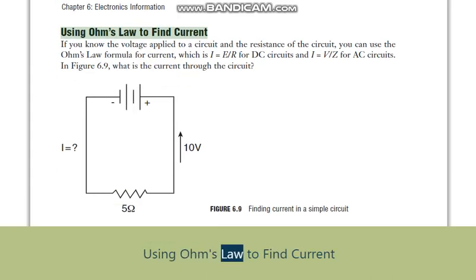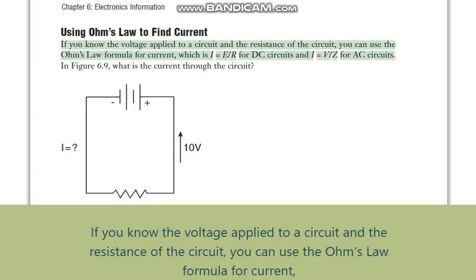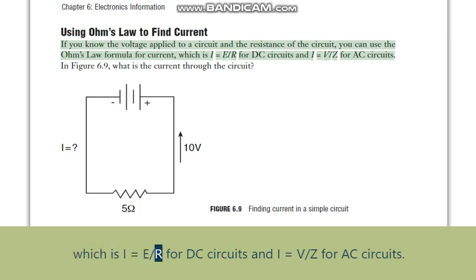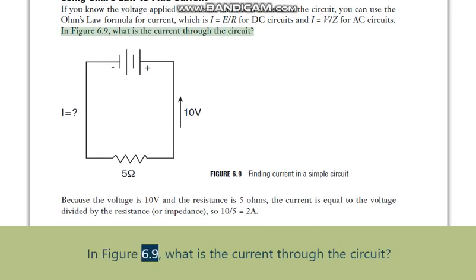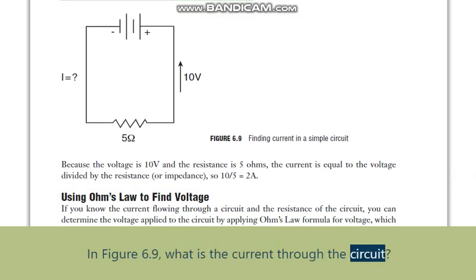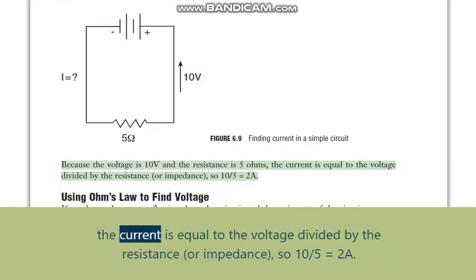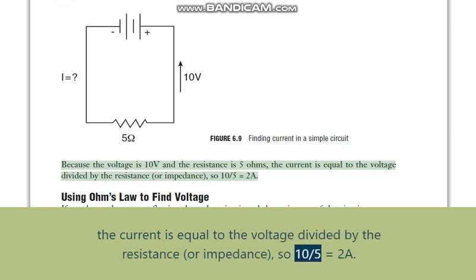Using Ohm's law to find current. If you know the voltage applied to a circuit and the resistance of the circuit, you can use the Ohm's law formula for current, which is I equals E slash R for DC circuits, and I equals V slash Z for AC circuits. In figure 6.9, because the voltage is 10V and the resistance is 5 Ohms, the current equals voltage divided by resistance (or impedance): 10 divided by 5 equals 2A.